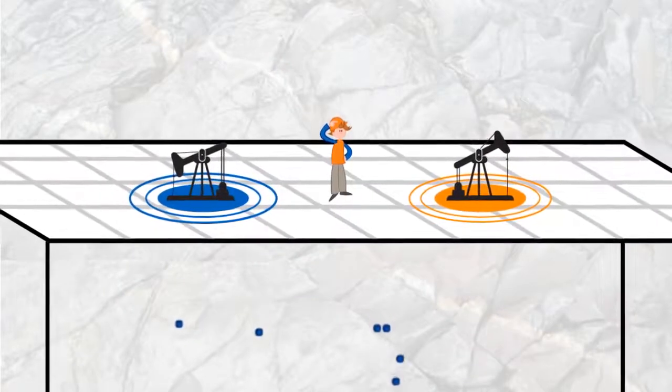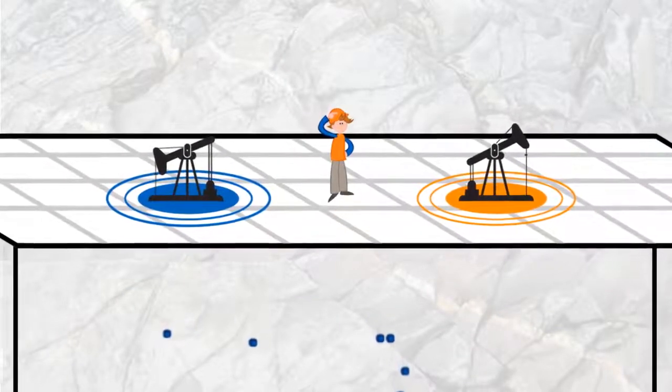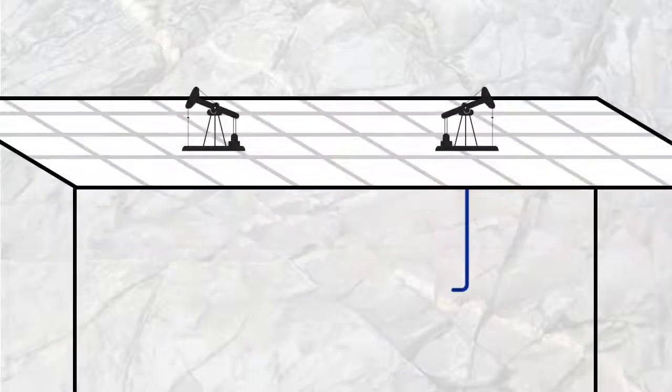Like figuring out why two otherwise identical wells are producing differently, or how far apart the wells need to be so they don't interfere with each other.